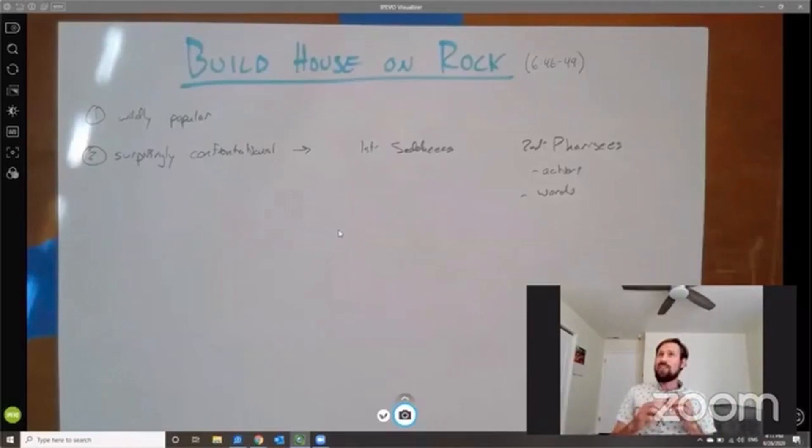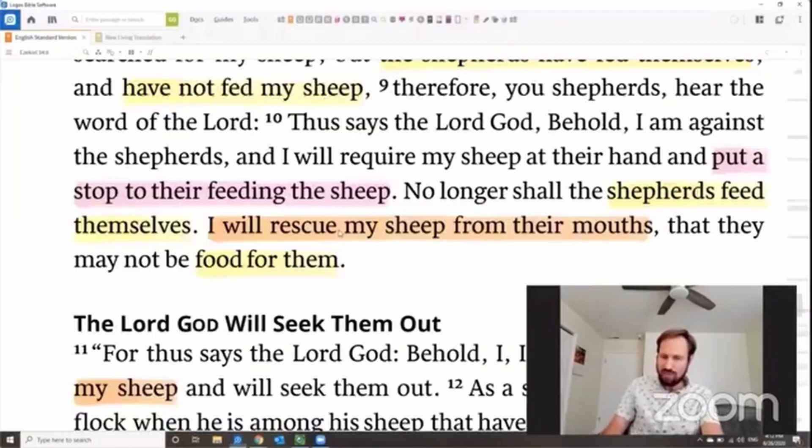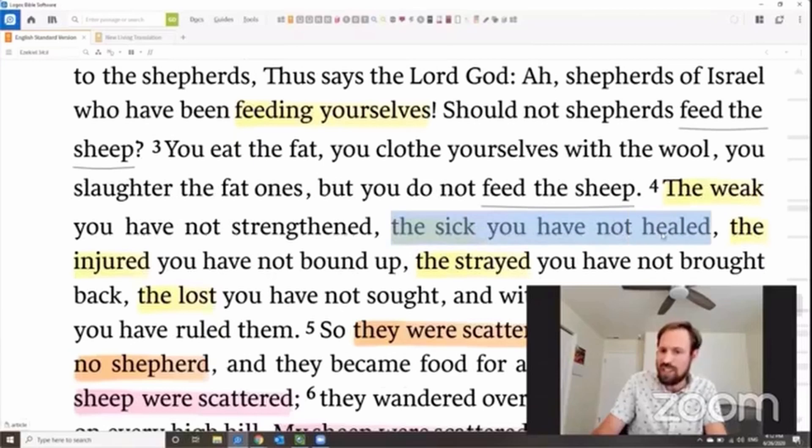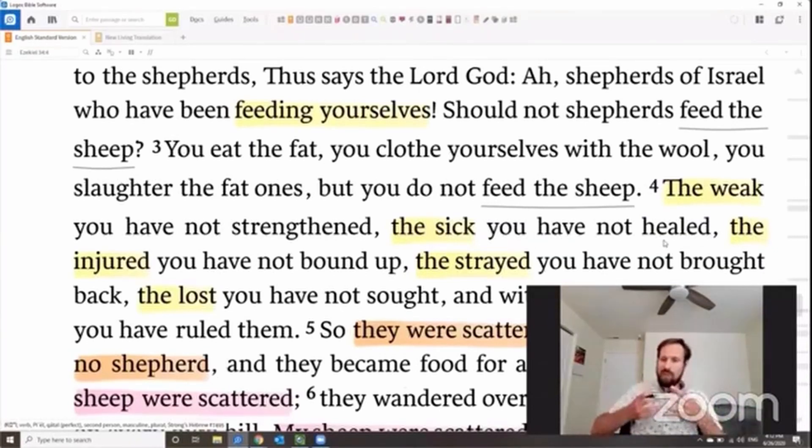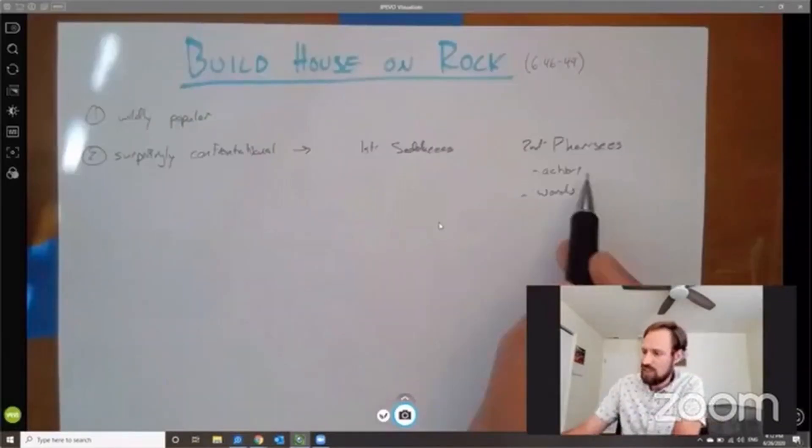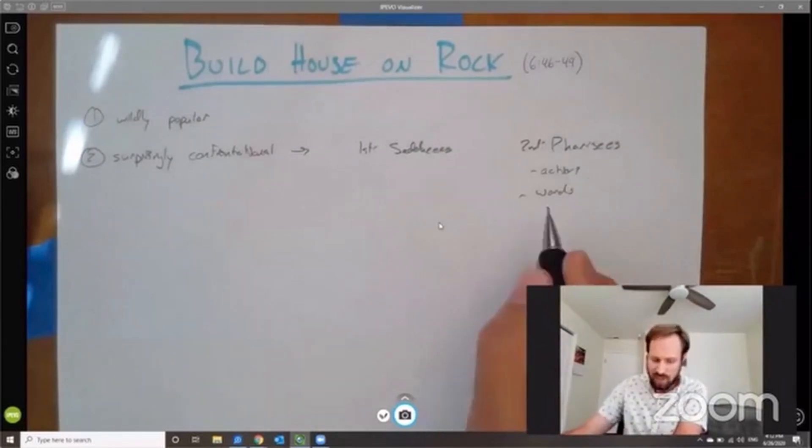We remember as well that Jesus during this time is going and he's eating with sinners, right? Sinners and tax collectors. And the Pharisees, they don't like that at all. But what does Jesus say in response to that? He says that the healthy have no need of a physician. Remember that line? The healthy have no need of a physician, but the sick do. And remember that line from Ezekiel we just read? What should the shepherds do? The shepherds should heal the sick. And Jesus says that the healthy have no need of a physician, but the sick do. And I'm here to be that physician for them. The son of man has come to seek and to save the lost, which just runs right up against the Pharisees' kind of modus operandi.